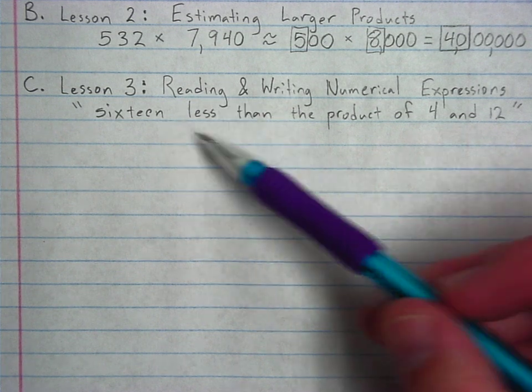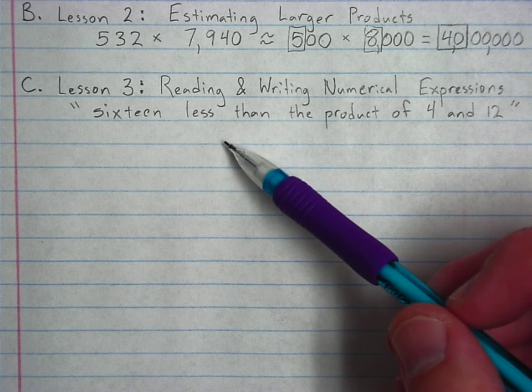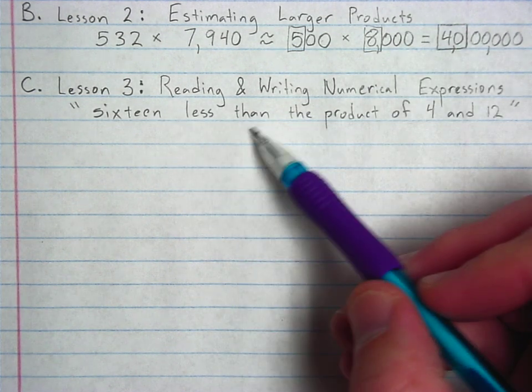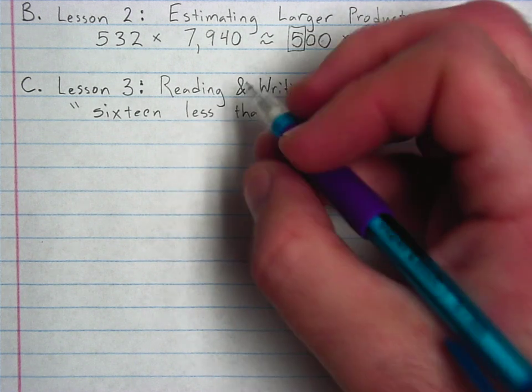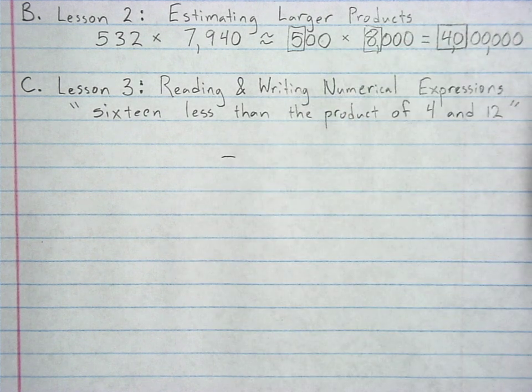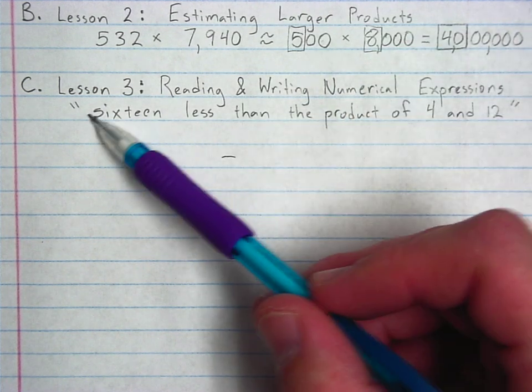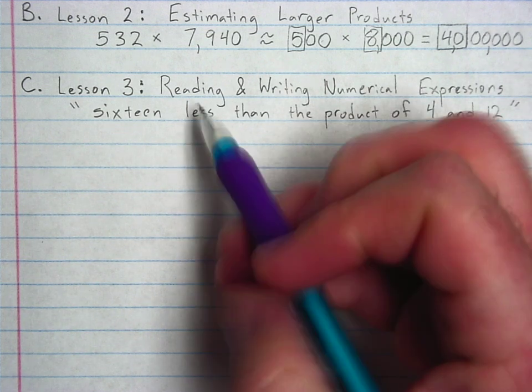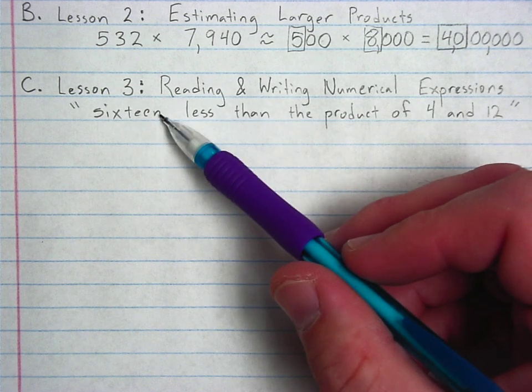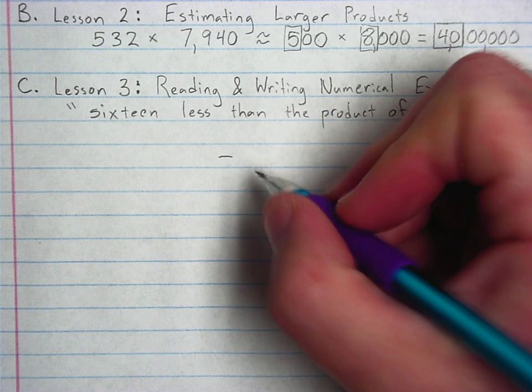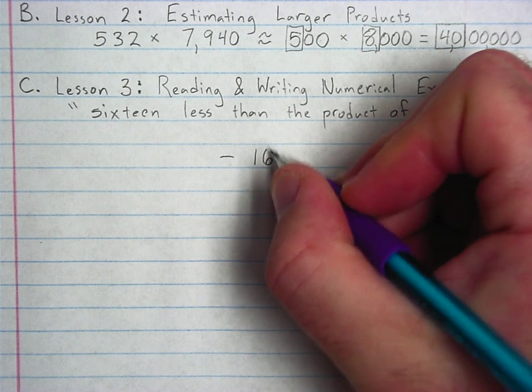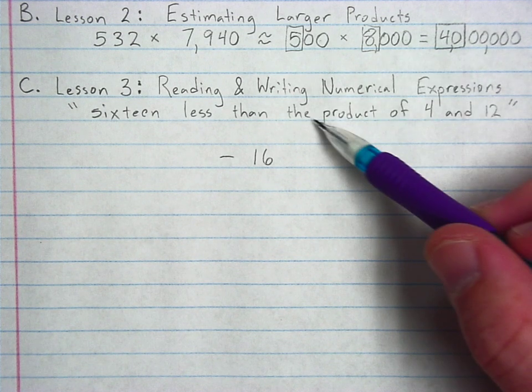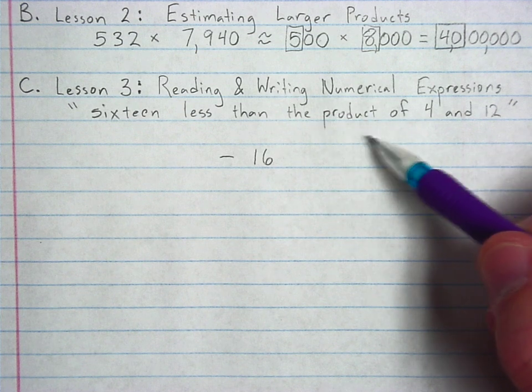Okay. 16 less than. This is a very challenging phrase. That's why I picked it for this review. A lot of students missed this on the test over this material. If you have less than, a lot of people recognize that that's subtraction and that's great. We need that. Okay. The problem is they continue reading in order 16 minus that's not the case here. If it's 16 less than, English is weird. I don't know why it's worded this way, but 16 less than means you are subtracting 16 away from whatever's over here.